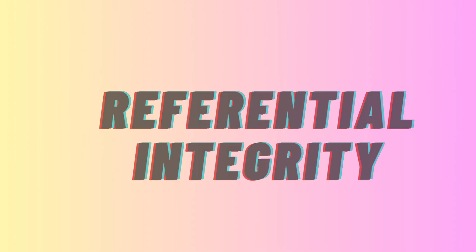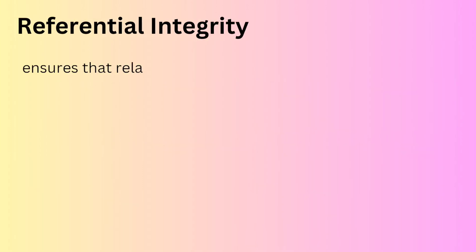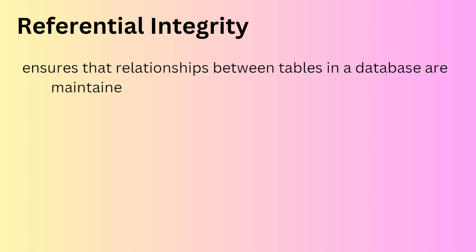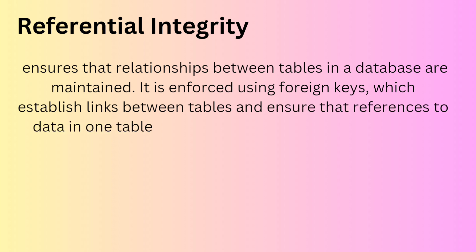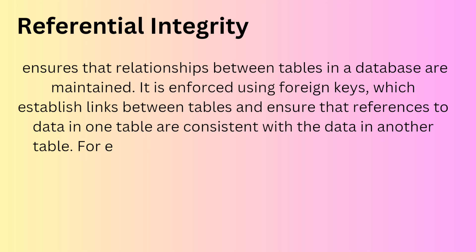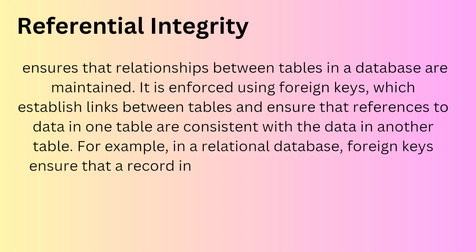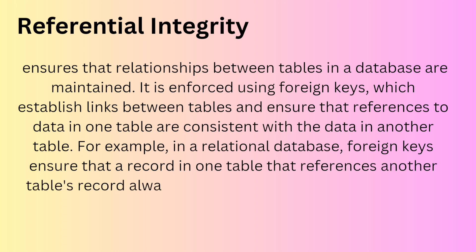Referential integrity ensures that relationships between tables in a database are maintained. It is enforced using foreign keys, which establish links between tables and ensure that references to data in one table are consistent with the data in another table. For example, in a relational database, foreign keys ensure that a record referencing another table's record always points to a valid and existing record.